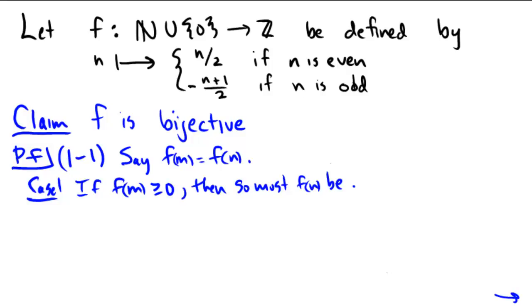If they're non-negative, that must mean they came from the top branch. Therefore, since they came from the top branch, m/2 would equal n/2, and multiplying both sides by 2 would force m to equal n. So if the outputs were the same, the inputs must have been the same if they were both non-negative.